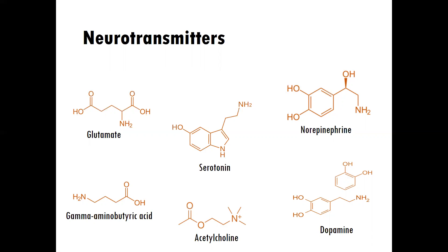You see here that we have glutamate, serotonin, norepinephrine, GABA — which is gamma-aminobutyric acid — acetylcholine, and dopamine. These are very important neurotransmitters, and many of these are implicated in medications that clients take for mental disorders.